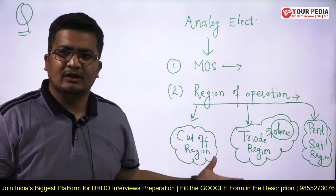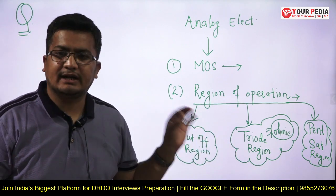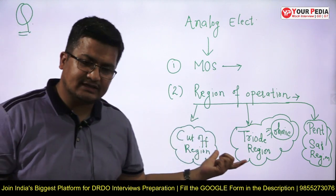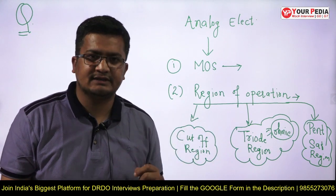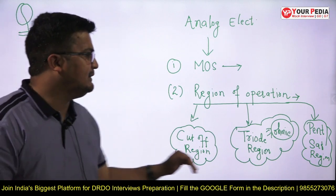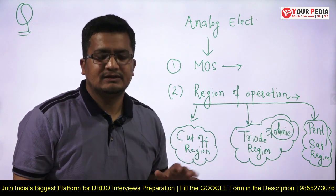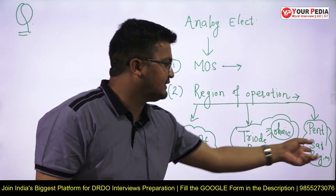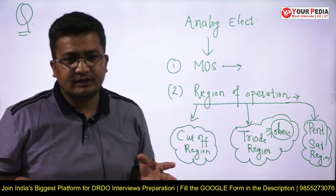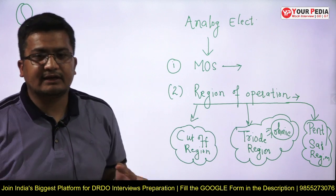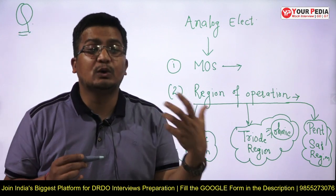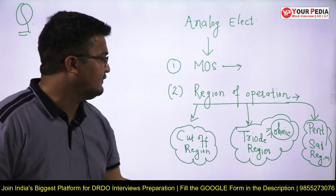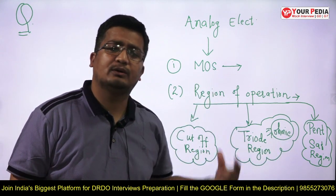If you know how to draw the characteristics of drain current versus V_DS for a fixed value of V_GS, or drain current versus V_GS, then you will be able to tell their application from the circuit point of view. You don't need to memorize applications — if you know the voltage-current characteristics, you can directly conclude what kind of behavior this MOSFET is showing for cutoff, triode, or pentode region.